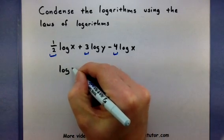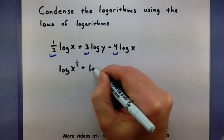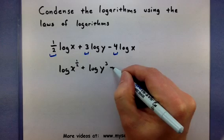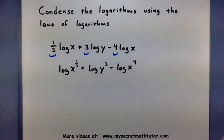So this will be log of x to the 1 half plus log of y to the 3rd minus log of x to the 4th.